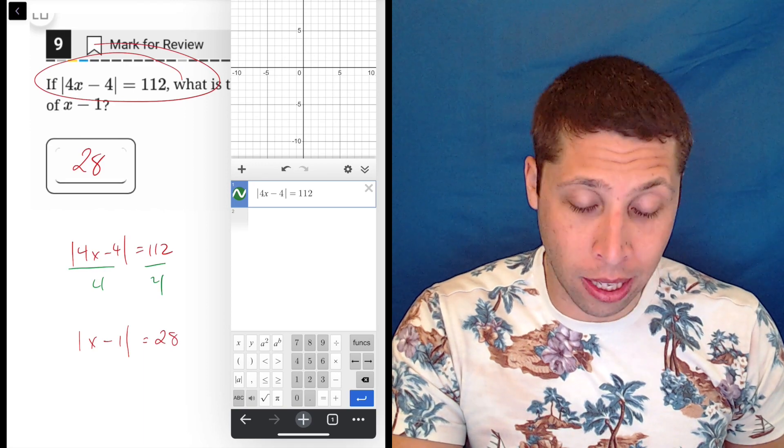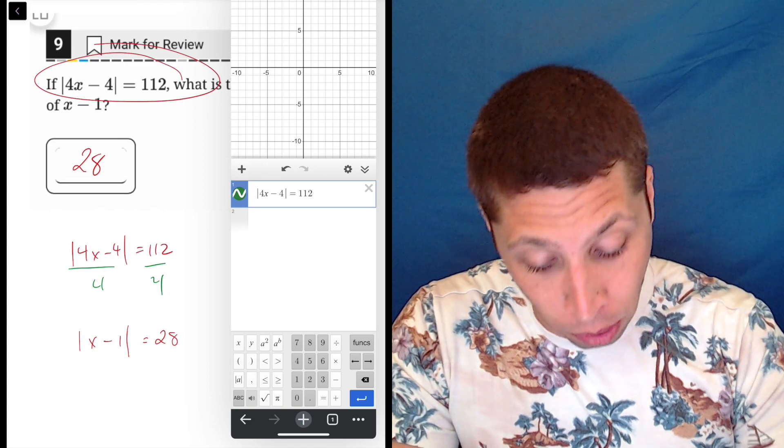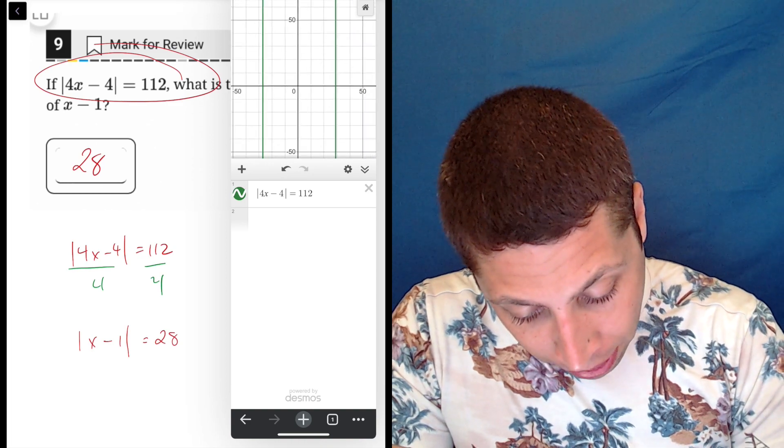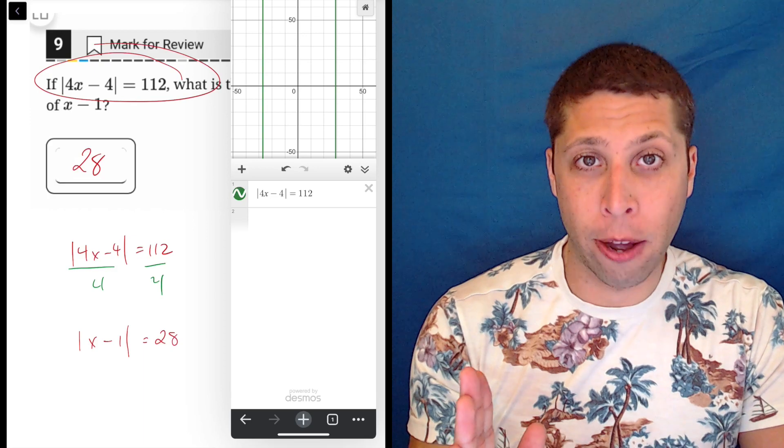So notice, though, when I graph it, I don't see anything, right? There's nothing coming up. But it just means that my zoom is wrong, so I'm going to just zoom out, and on my iPad, it's very easy, and see, now I see two green lines straight up and down.